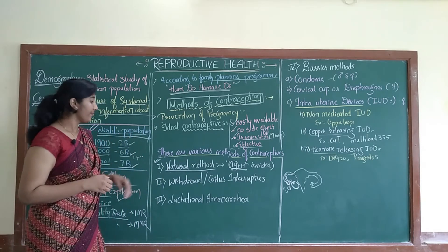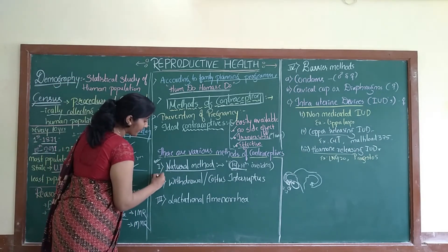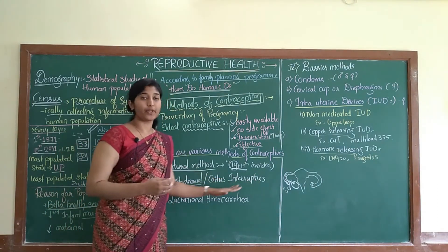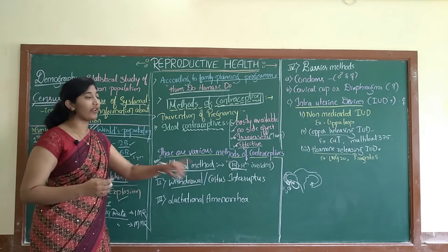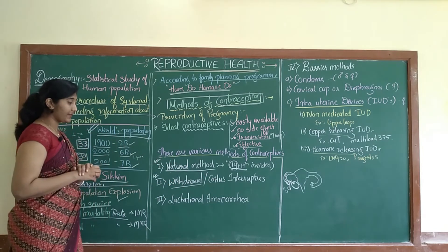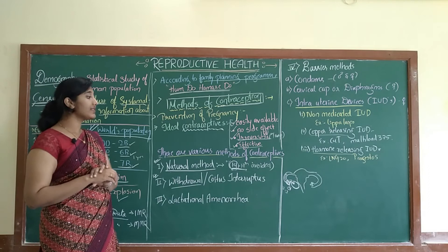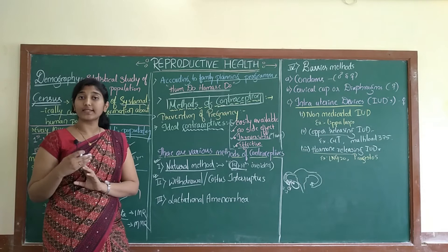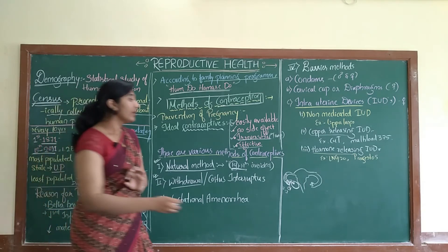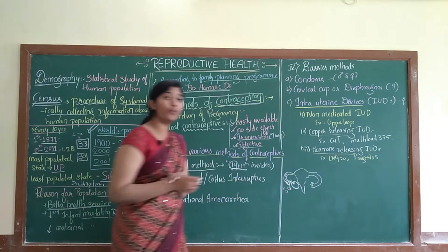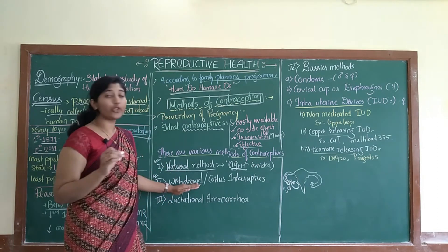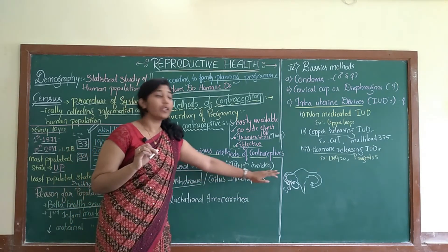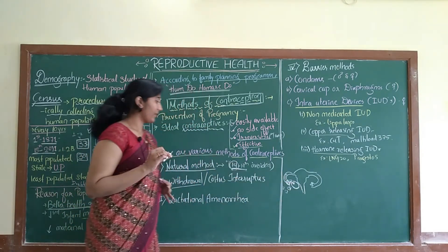The second method is the withdrawal method, also called coitus interruptus. This means the sperm should not be deposited in the vagina.